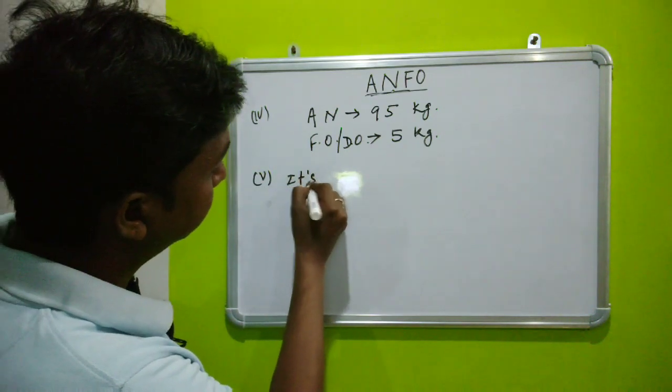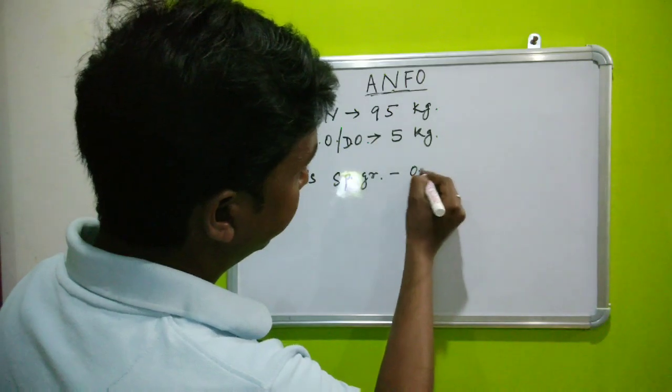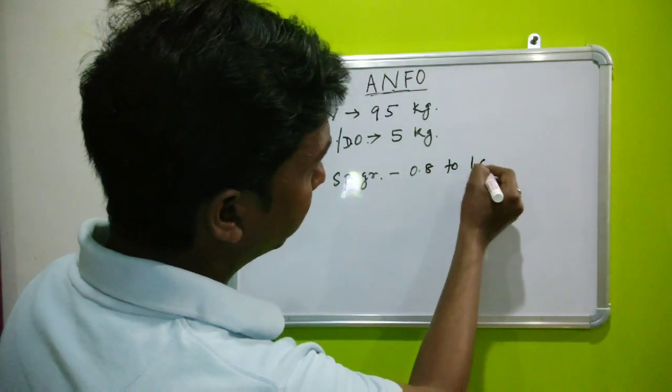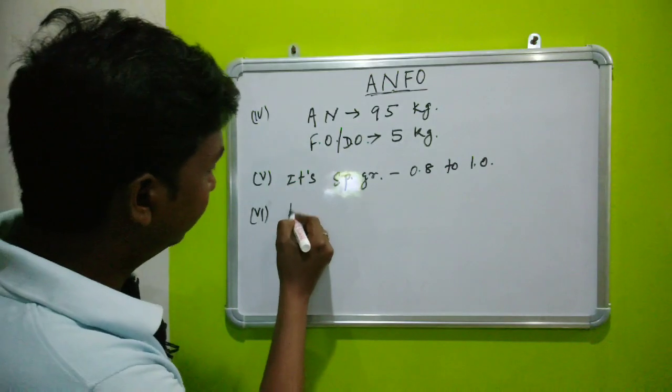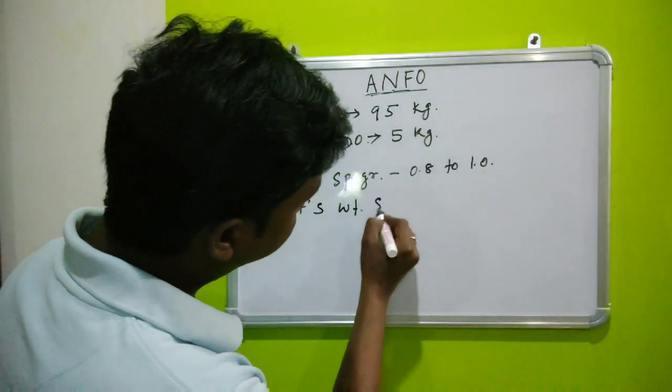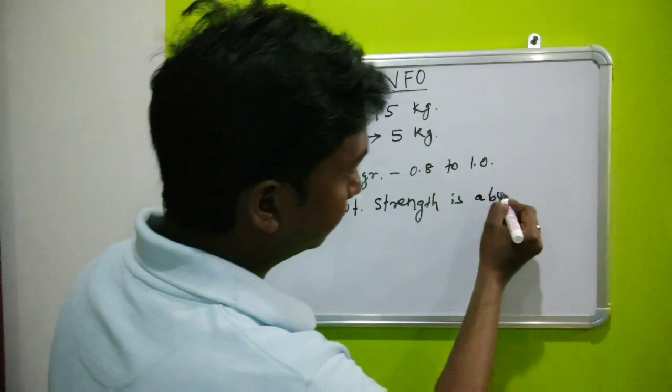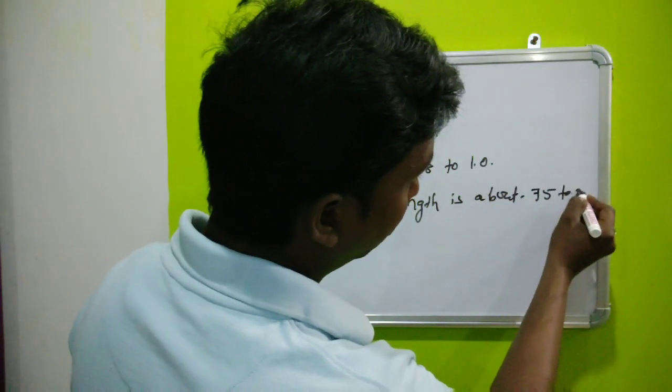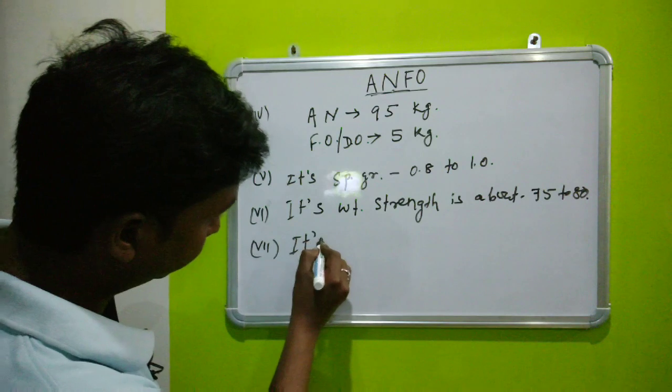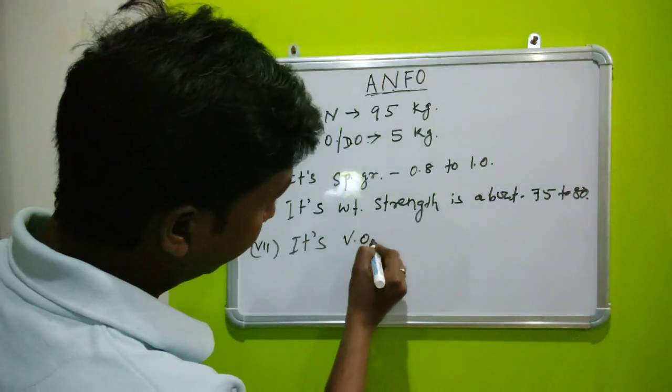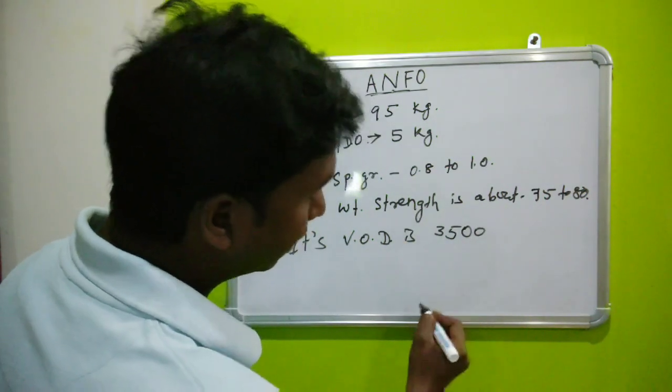Its specific gravity is between 0.8 to 1.0. Its wet strength is about 75 to 80, and its velocity of detonation (VOD) is about 3,500 meters per second.